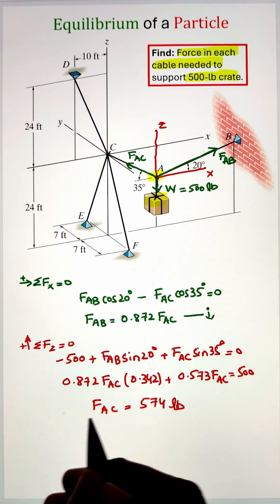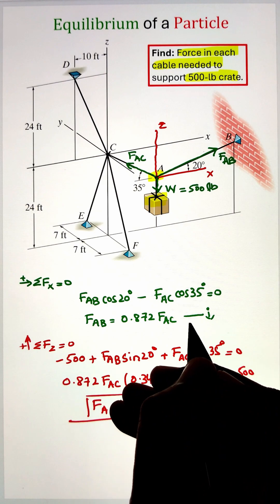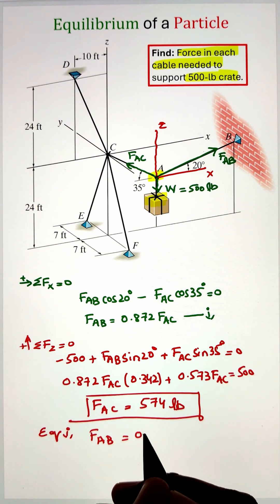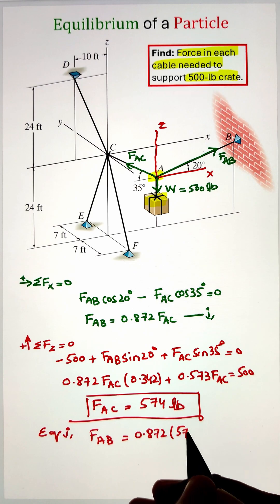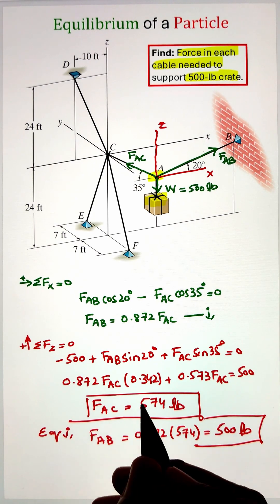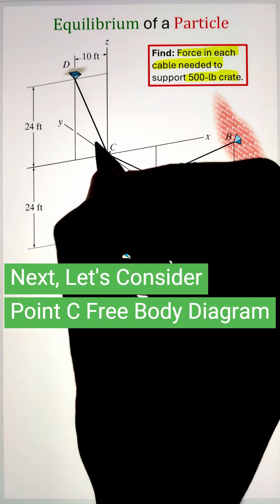Next we can place that information in equation one and solve for FAB, that is coming as 500 pounds. Once we have those values, now we can draw our free body diagram for joint C. We have already calculated the force from C to A, that is 574 pounds, making an angle of 35 degrees with respect to the horizontal x-axis.